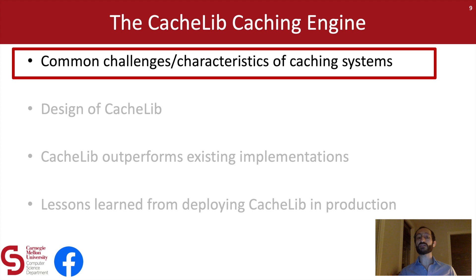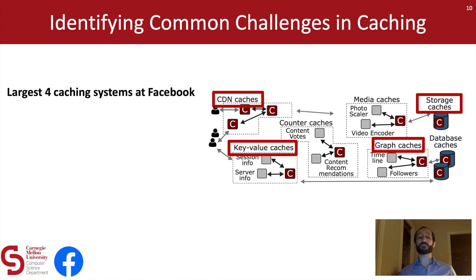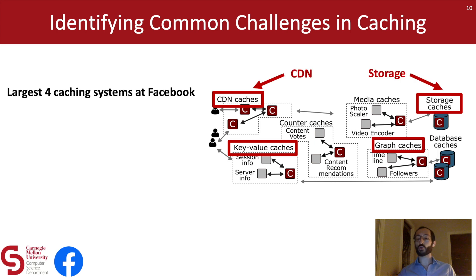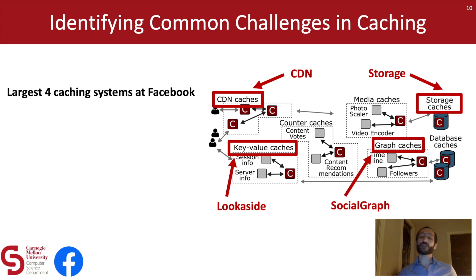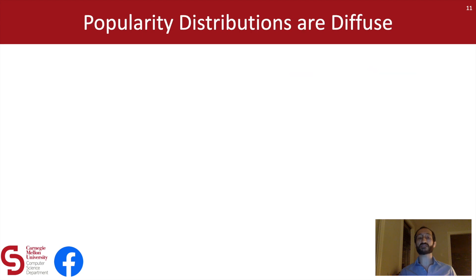To discuss the CacheLib caching engine today, I want to talk about the common challenges and characteristics of these different use cases and how they inspired the design of CacheLib. Then I'll show that CacheLib can actually outperform the existing implementations it's designed to replace, and finally, I want to discuss some of our lessons learned from deploying CacheLib in production at Facebook. To begin with these common challenges, I want to examine a sample of the four largest caching systems at Facebook in terms of number of bytes deployed: the CDN cache, storage cache, look-aside key-value cache, and social graph cache.